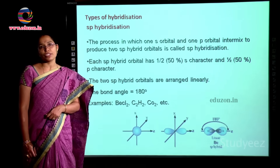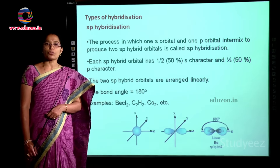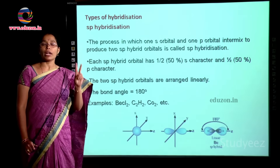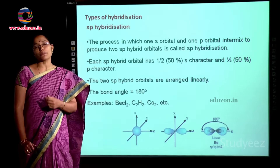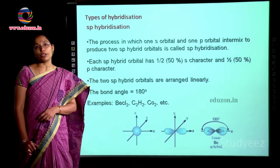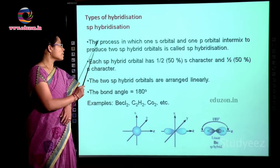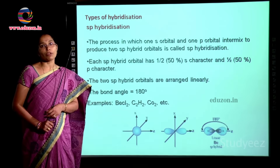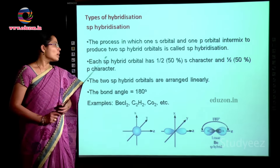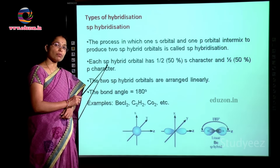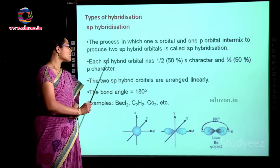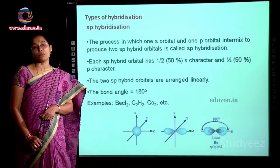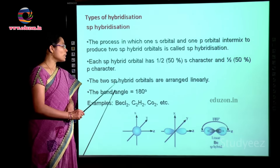Let us discuss the various types of hybridization involving s and p orbitals. The first is sp hybridization: the process in which one s orbital and one p orbital intermix to produce two sp hybrid orbitals. Since one s and one p combine, the total number of hybrid orbitals formed equals two. The s character in each sp hybrid orbital is 1/2, that is 50% s character and 50% p character.